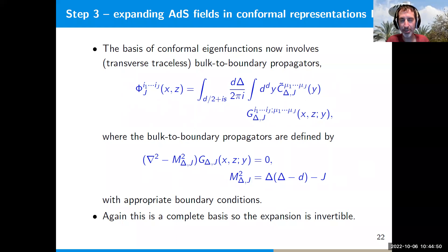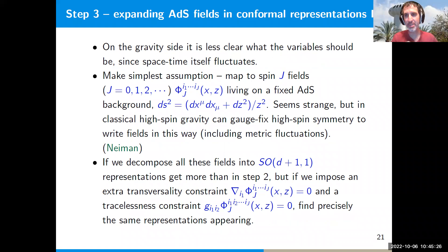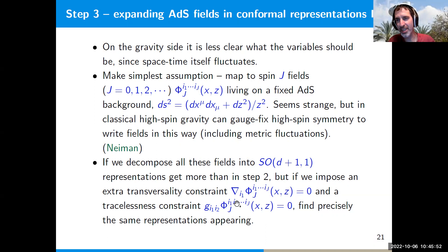Question: were the transverse-traceless conditions known ahead of time from the classical theory? What is known is that the physical on-shell excitations around the AdS background in Vasiliev theory are exactly spin-j transverse traceless fields. So at that level the mapping is consistent. Off-shell we don't really know what to expect on the high-spin gravity side because there is no off-shell formulation, and here we're doing an off-shell mapping. Whatever we get is by construction a correct description of some theory on the gravity side.